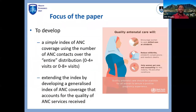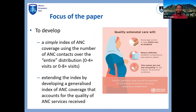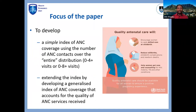The focus of the paper is to develop a very simple and easily understood index for policymakers, researchers, and users. It takes into account the full spectrum of ANC coverage — not just looking at having a minimum of four visits, but the whole distribution of ANC visits by women. We can extend that index to account for quality of ANC services, which is important in the context of progressive realization and universal health coverage.